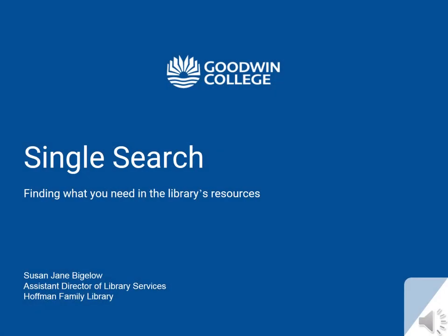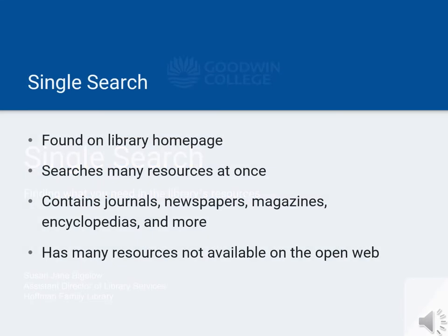This video from the Hoffman Family Library at Goodwin College will teach you how to use our powerful single search tool to find articles and other information. This tool searches many different library resources at once and gives you access to a vast collection of material from newspapers, magazines, journals, encyclopedias, and more. Much of this material can't be found for free elsewhere on the web.